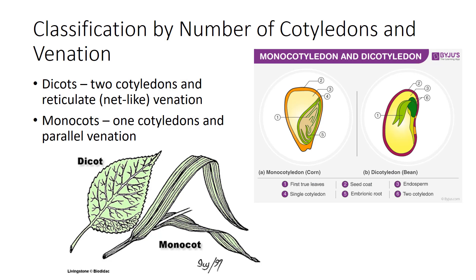The number of cotyledons, or seed leaves, and the type of leaf venation are commonly used to classify and name plants. Dicot plants are characterized by two cotyledons and have reticulate leaf venation. Monocot plants are characterized by one cotyledon and have parallel leaf venation. There are other characteristics of monocots and dicots that will be covered in the next video.